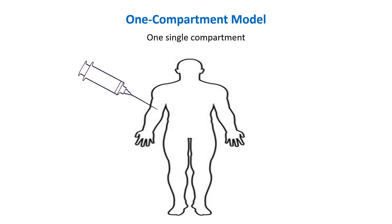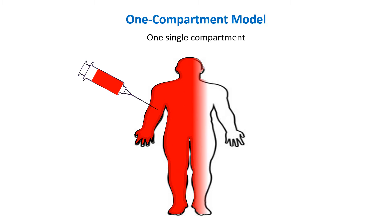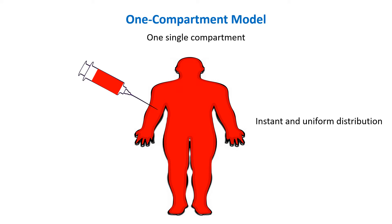protein binding or tissue barriers we have discussed earlier. Once the drug enters the body, it is instantly and evenly distributed in this compartment, also called the central compartment. This one and only compartment is the volume into which the drug distributes in the one compartment model.